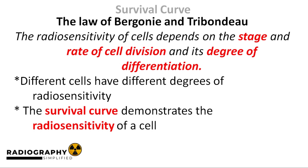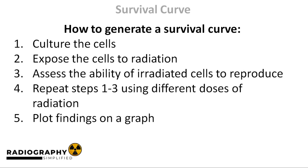This is where the survival curve comes in. It helps us demonstrate the sensitivity of a particular cell type to radiation. A cell survival curve is generated through experiments. First, the cells are cultured — grown under laboratory conditions. After culturing, the cells are exposed to a specified dose of radiation. Then the ability of the cells to divide is assessed. Cells that retain the ability to divide are reported as the fraction of cells that survived irradiation. The process is repeated with other doses of radiation and then a graph is generated.